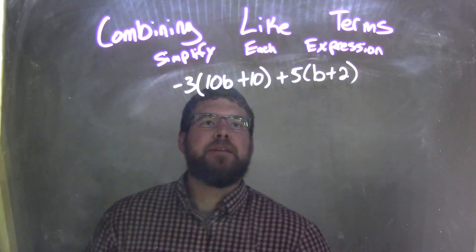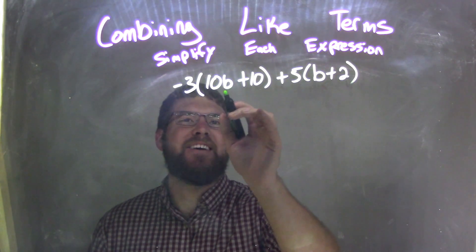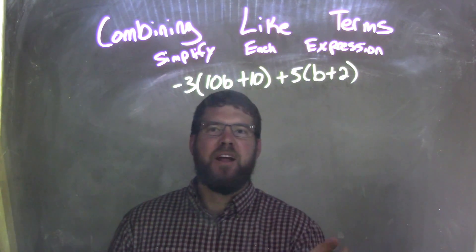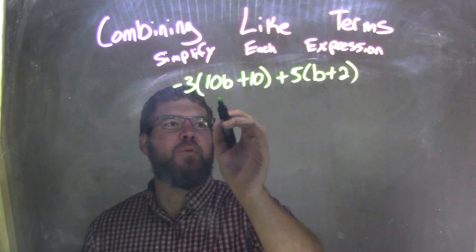Well, I want to distribute this, or simplify this. Inside the parentheses, no like terms, nothing I can do. But the negative 3 I can distribute.